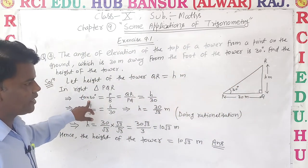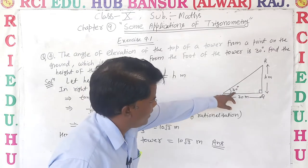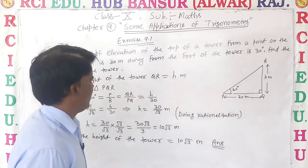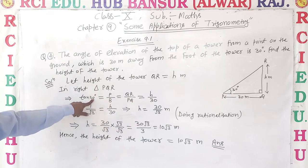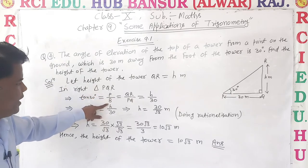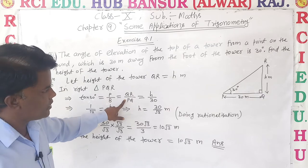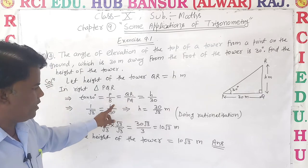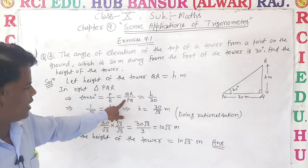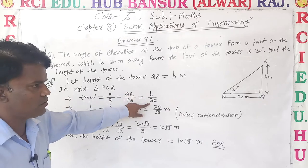Which trigonometric ratio involves perpendicular and base? Tan. The angle here is 30 degrees, so we take tan 30. Tan 30 equals perpendicular upon base. Perpendicular is QR and base is PQ. Putting the values: h upon 30.